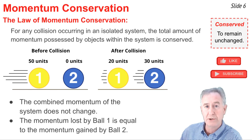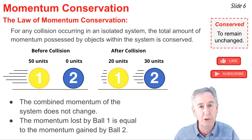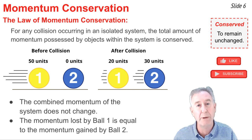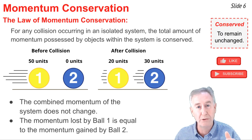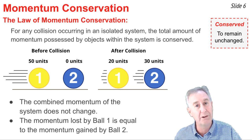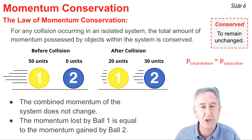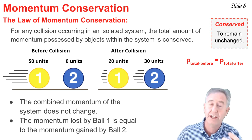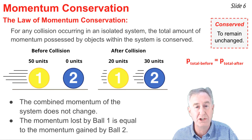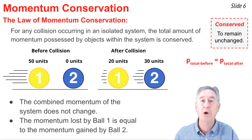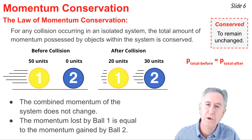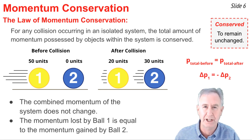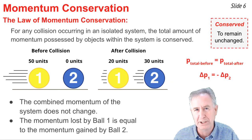We can put some sample numbers in to illustrate. Ball one has 50 units of momentum, ball two zero. Before the collision, the total momentum is 50. After the collision, ball one has 20 units and ball two has 30 units — that's a total of 50. The total amount of momentum has not changed; it's the same before as after. If we look at the changes of the individual objects, ball one changed its momentum by negative 30 (from 50 to 20), and ball two has a change of positive 30 (from zero to 30). The change of ball one is equal and opposite to the change of ball two. That's momentum conservation.